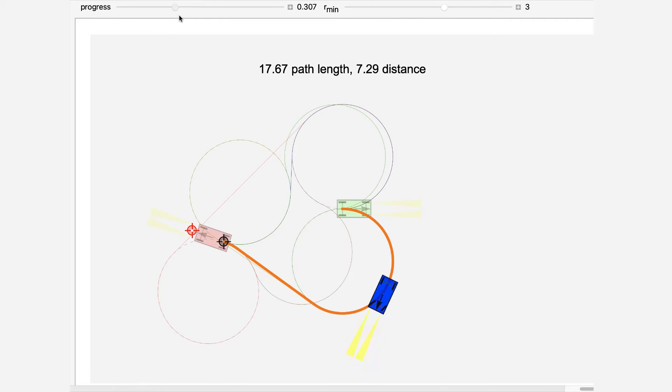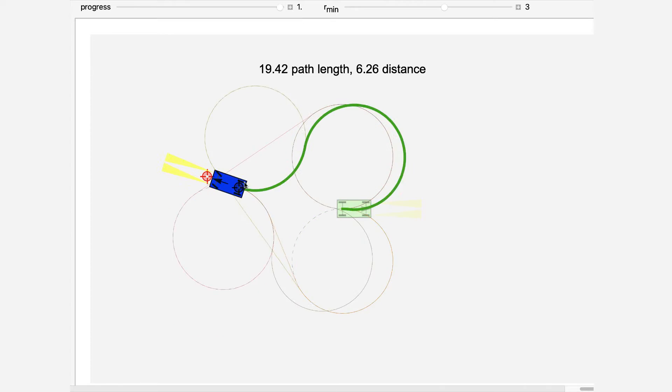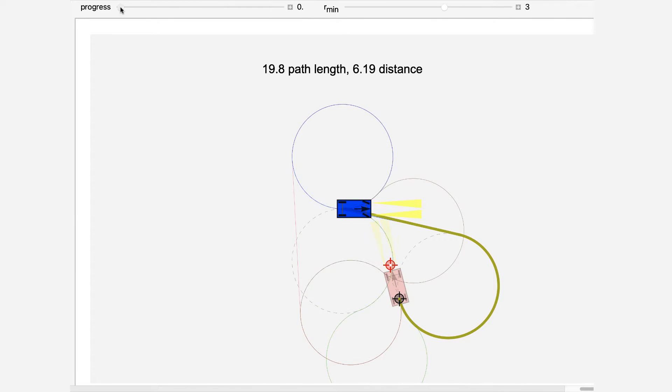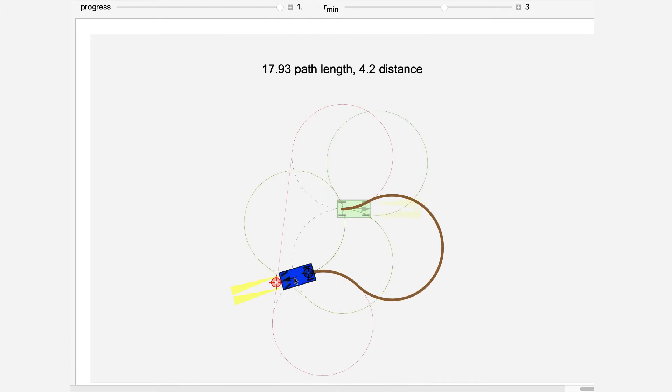How can we apply robotics planning to practical problems like driving a car? This online demo shows the shortest length path for a car that can only move forwards.